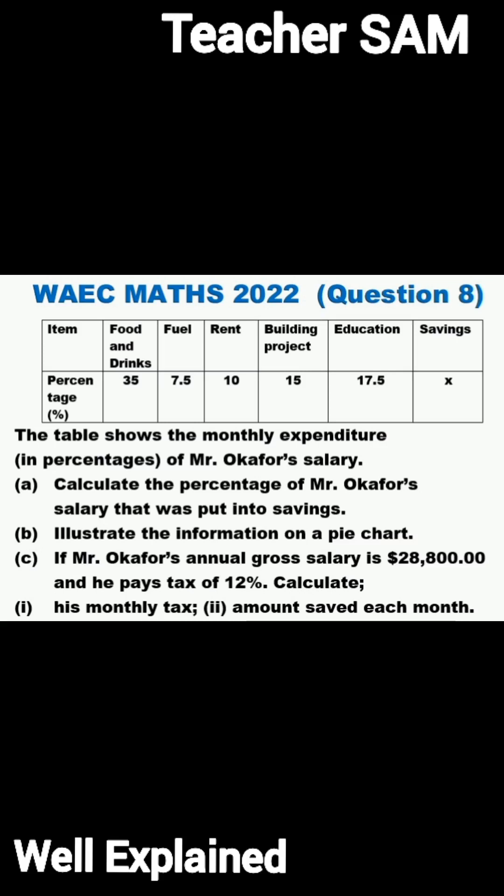Part C: If Mr. Okafor's annual gross salary is $28,800 and he pays tax of 12%, calculate (i) his monthly tax, and (ii) the amount saved each month.